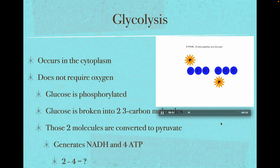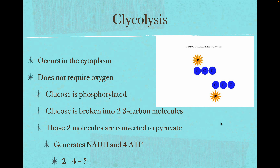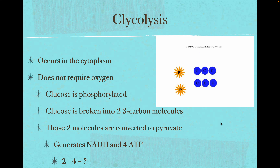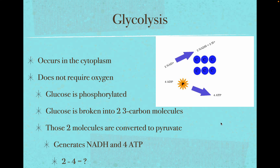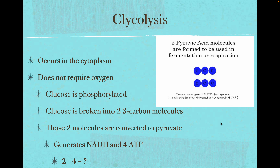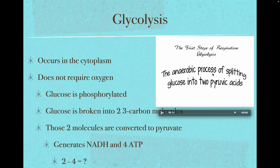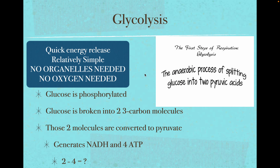Glucose gets into the cell, two phosphates are added to it. It's broken into three-carbon molecules called pyruvic acids or pyruvate. It's a quick energy release, relatively simple. Organelles are not needed. Oxygen is not needed. All organisms can do glycolysis.